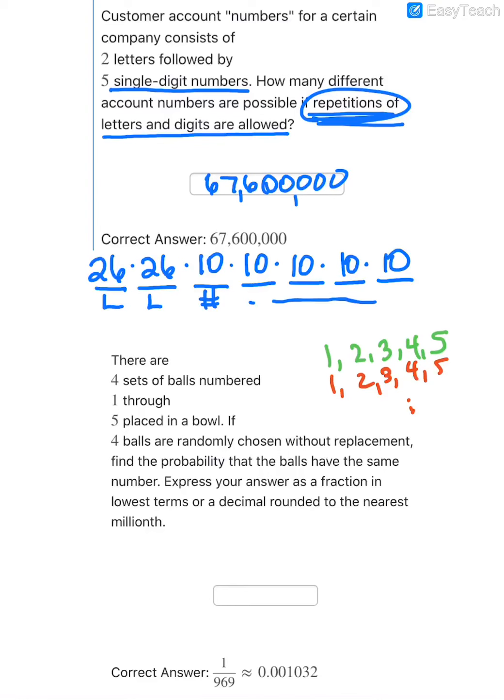And it says four balls are randomly chosen without replacement. So I'm going to think of four stages here. Without replacement means once I take the first ball out, I'm not going to put it back.